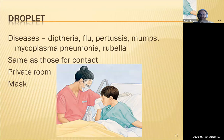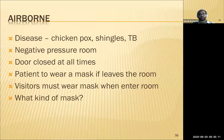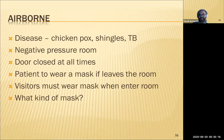Droplet precautions apply to diseases like diphtheria, flu, pertussis, rubella, mycoplasma pneumonia — add a mask to the standard contact setup in a private room. Airborne precautions apply to chicken pox, shingles, TB, and last week's COVID-19. A negative pressure room is required — we don't want air from the room getting out; it stays filtered with its own air supply.